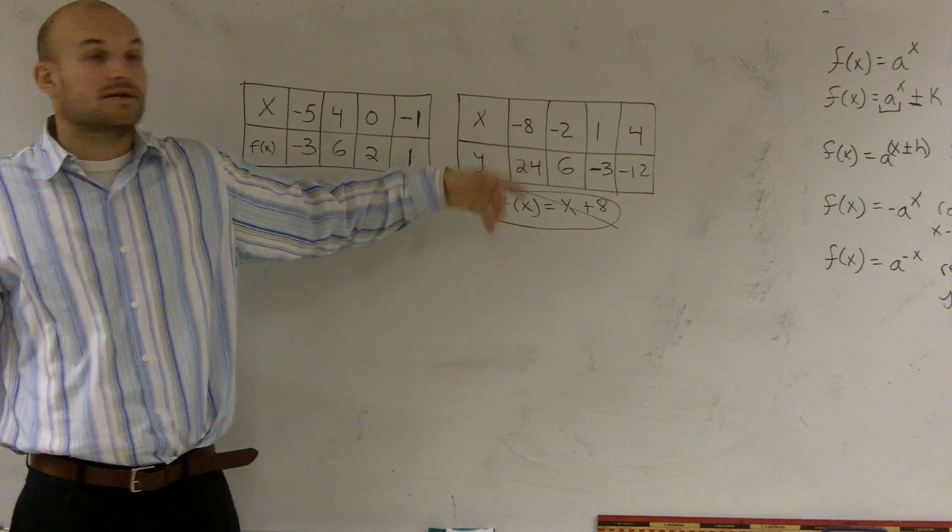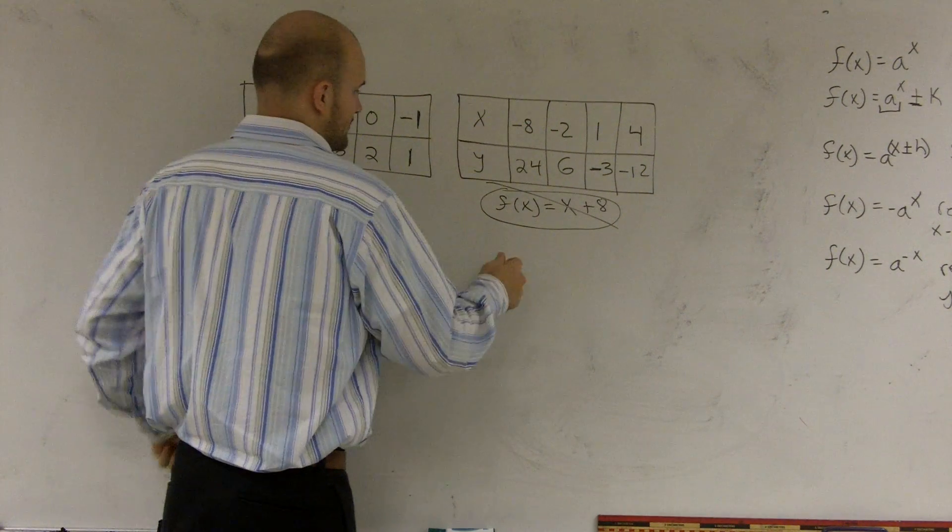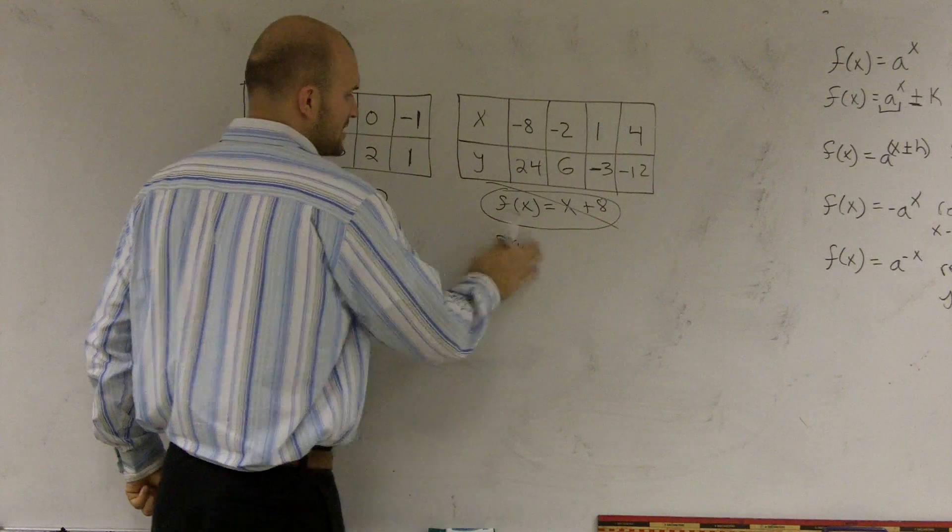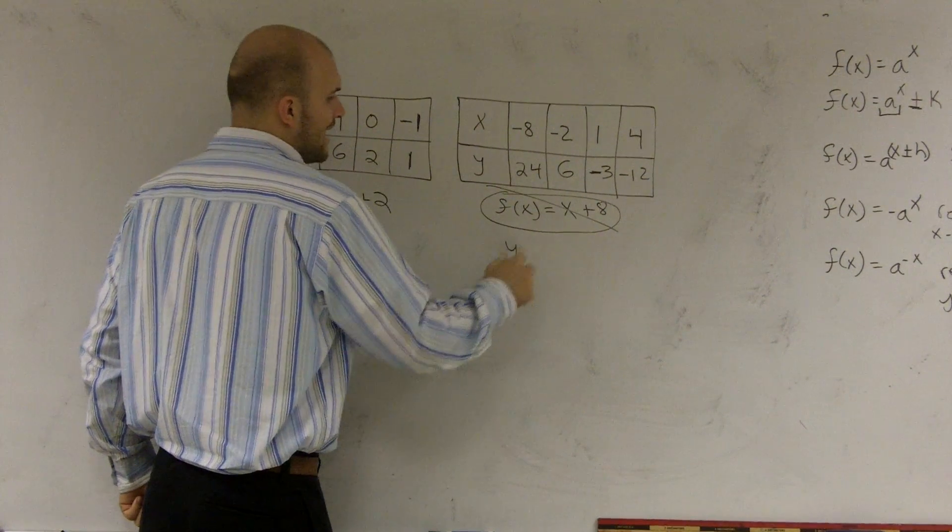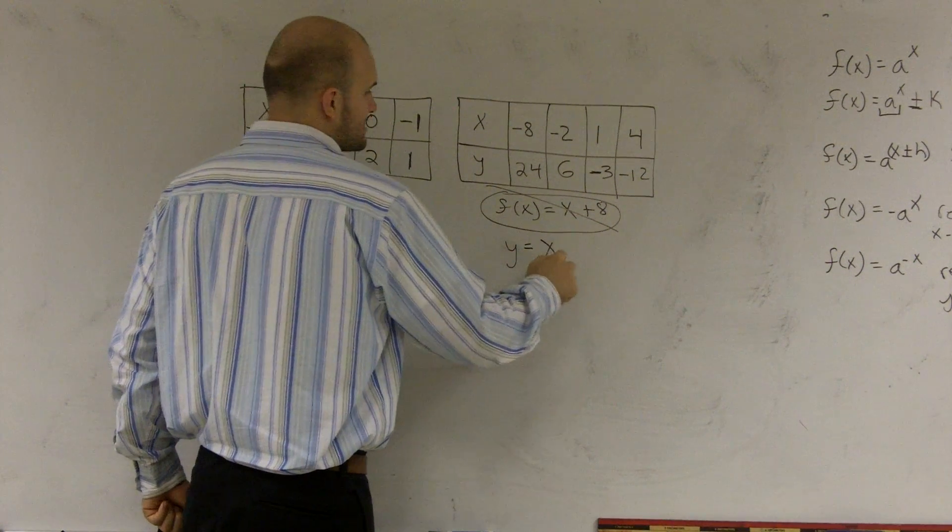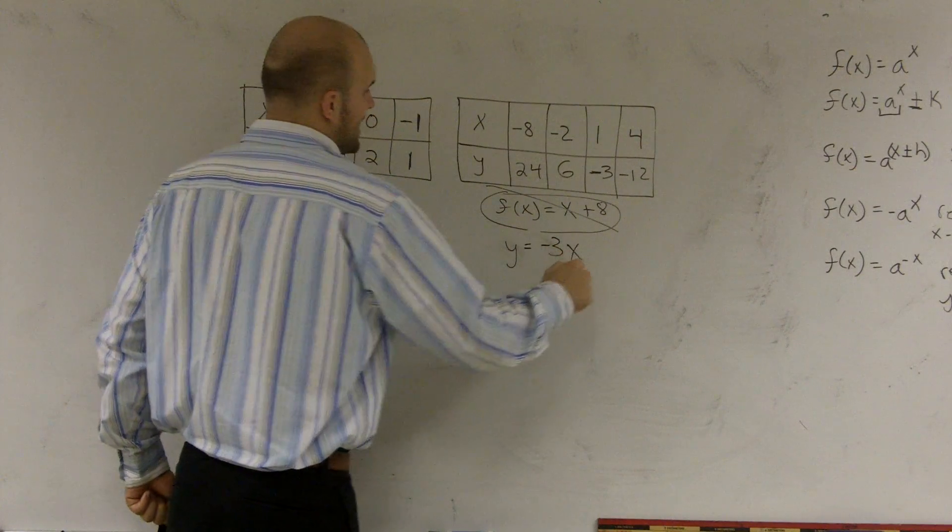Negative three. Negative three, right? So I can say f of x, I'm sorry, this one's a y. y equals x, or sorry, negative three times x.